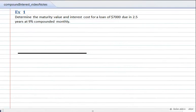Example 1. Determine the maturity value and interest cost for a loan of $7,000 due in two and a half years at 9% compounded monthly.